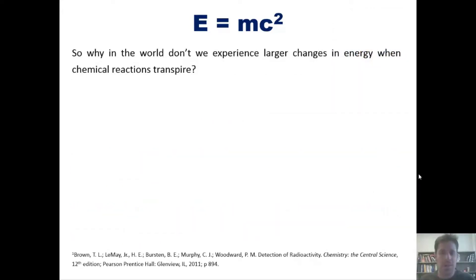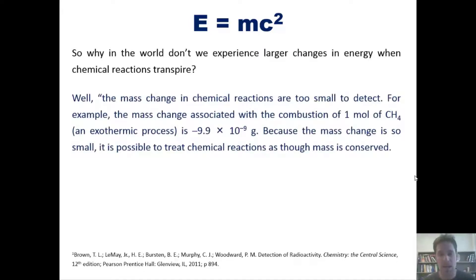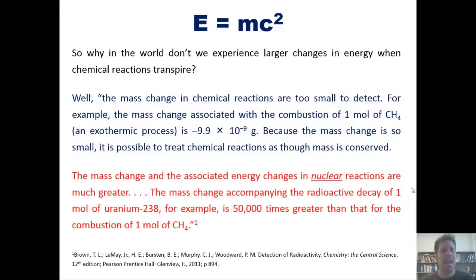So why in the world don't we get to experience larger changes in energy when simple chemical reactions transpire? Well, the reason is that the mass change in chemical reactions are too small to detect. For example, the mass change associated with the combustion of one mole of methane gas, which is a very exothermic process, is negative 9.9 times 10 to the negative 9 grams, which is a super tiny number. Because the mass change is so small, it is possible to treat chemical reactions as though mass is completely conserved. In contrast, the mass change and the associated energy change in nuclear reactions are much greater. The mass change accompanying the radioactive decay of one mole of uranium-238, for example, is 50,000 times greater than that for the combustion of one mole of methane gas.